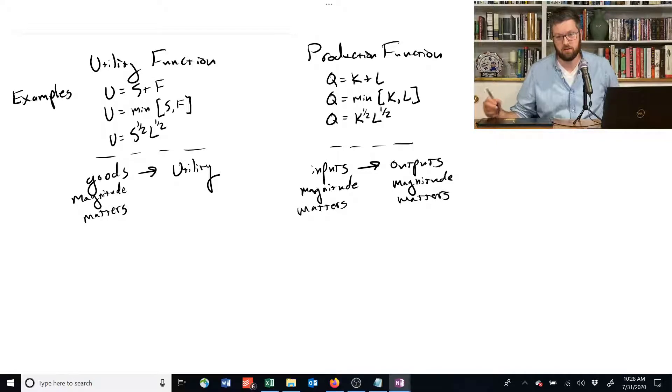What I mean by that is having twice as much of something means something important rather than having four times as much. And that contrasts with utility where only the order matters. So if one utility is three and one utility is two, that means you prefer the one with three over the one with two. And if we doubled all of those, six to four, the preference ordering would still stay the same. And nothing else about the problem would change.